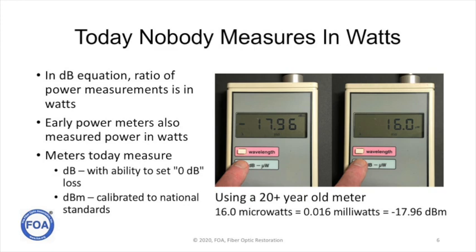Today in fiber optics, nobody measures in watts. They all measure in dB. Either dBm, calibrated to national standards, or dB to measure loss or gain. We had to go find a 25-year-old meter in order to show you what a measurement looks like of the same power in dB and in watts. And you can see we're measuring 16 microwatts, that's 0.016 milliwatts, which comes out to minus 17.96 dBm.